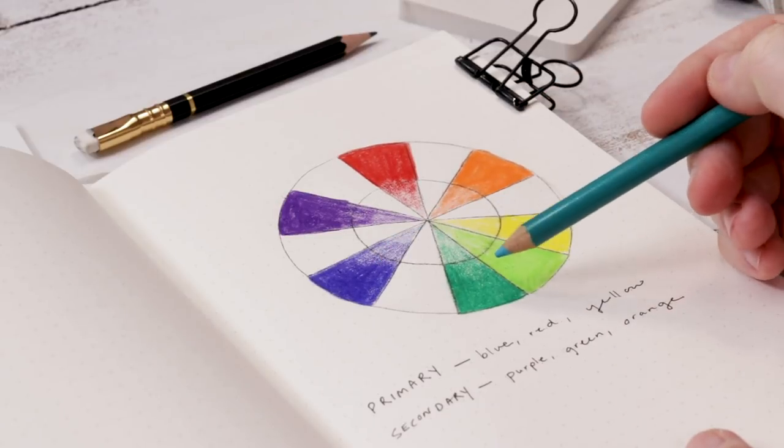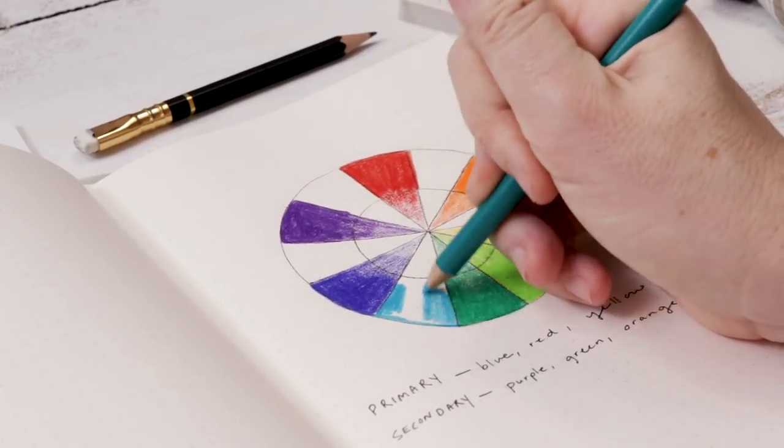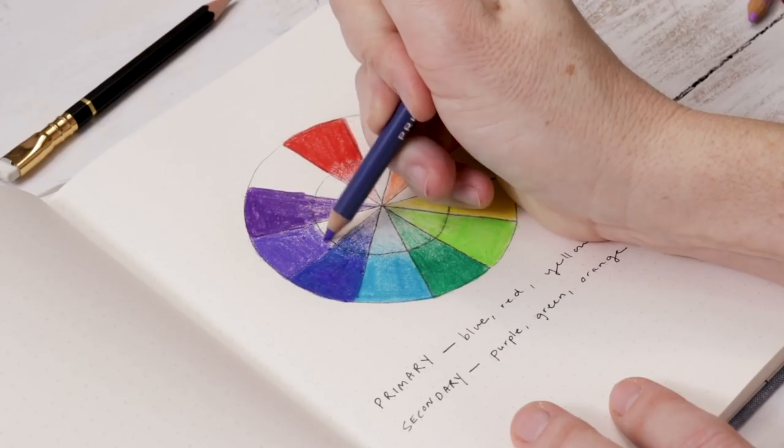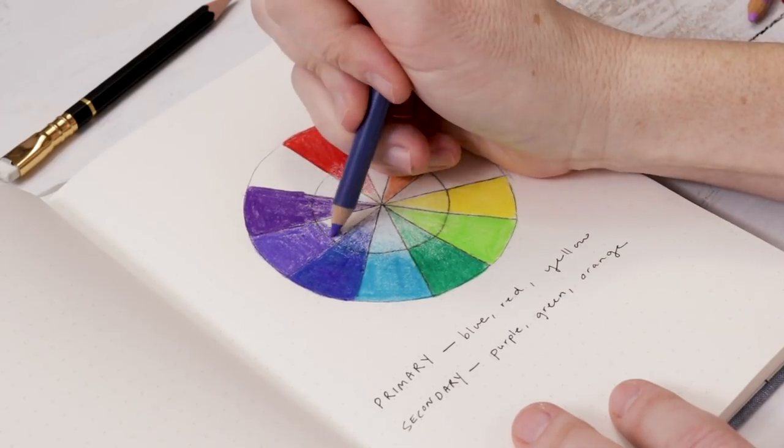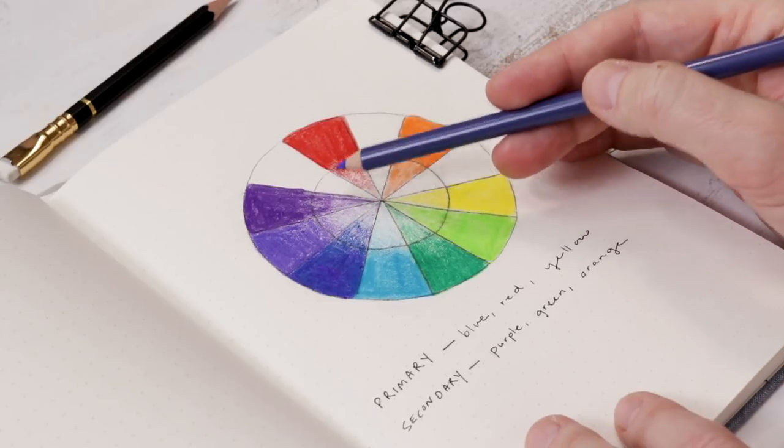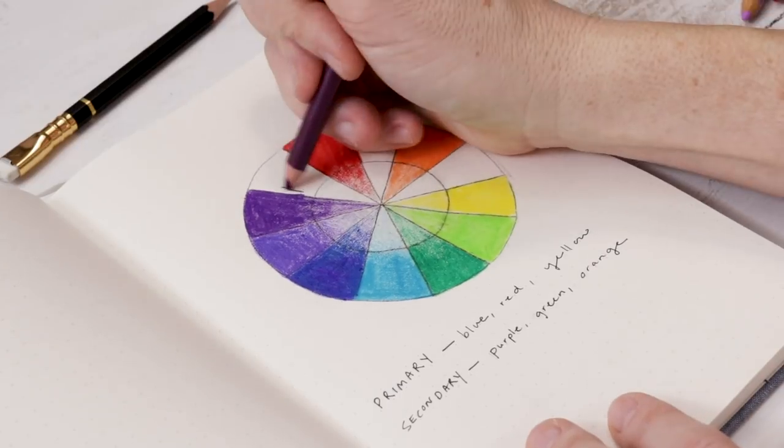Now I'm going to mix green and blue, and that gives me blue-green or teal, and so I'll add that to the wheel. Next we have a mix of blue and purple, and that gives us blue-purple or violet, also known as violet, so it's a very cool purple.